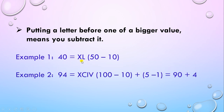Let's see one more example: XCIV. X comes before C; the value of X is 10 and the value of C is 100. Subtract 10 from 100 to get 90.